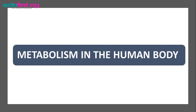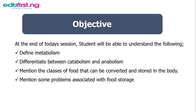At the end of this class you should be able to define metabolism, differentiate between catabolism and anabolism, mention the classes of food that can be converted and stored in the body, and lastly mention some problems that are associated with food storage in the body.